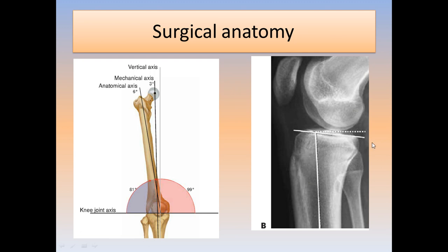There is also a posterior slope of about 6 to 7 degrees. If I put my extramedullary guide for the tibial cut and the rod is away from the tibial shaft, I increase the slope. If it is near the shaft, I decrease the slope. Be careful when you adjust the rod in the sagittal plane.